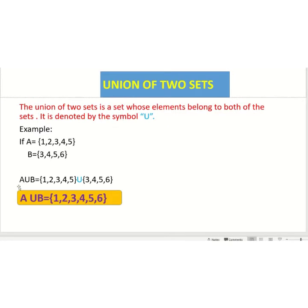In order to write the union of set A and B, we first have to write set A in tabular form, that is equals to 1, 2, 3, 4 and 5, and then the symbol of union of sets, and then we will write set B in tabular form, that is equals to 3, 4, 5 and 6.